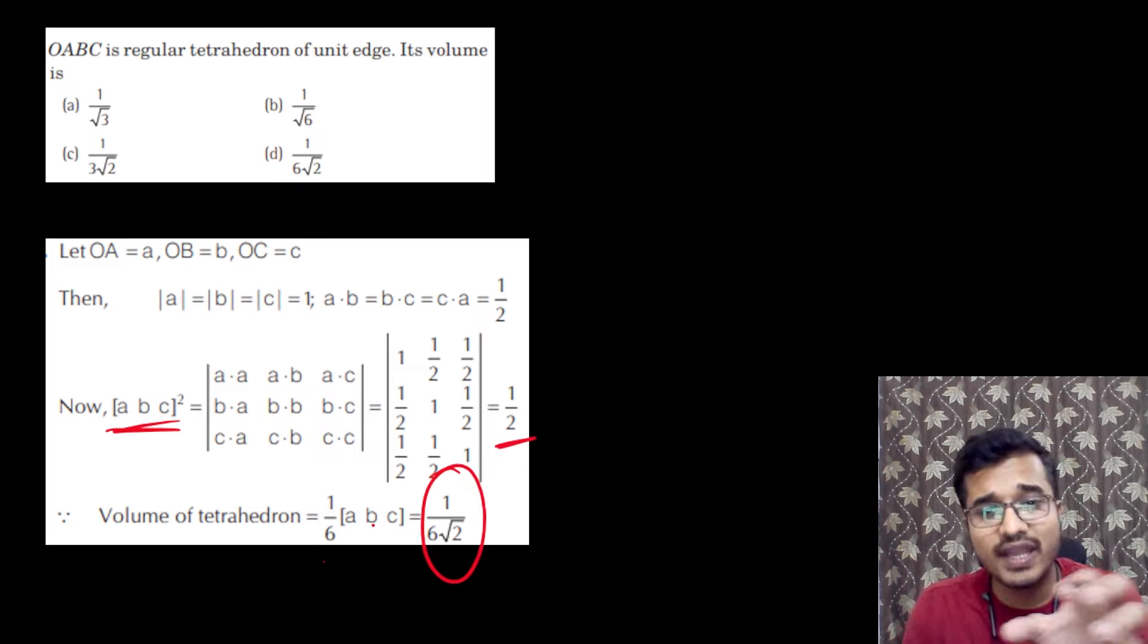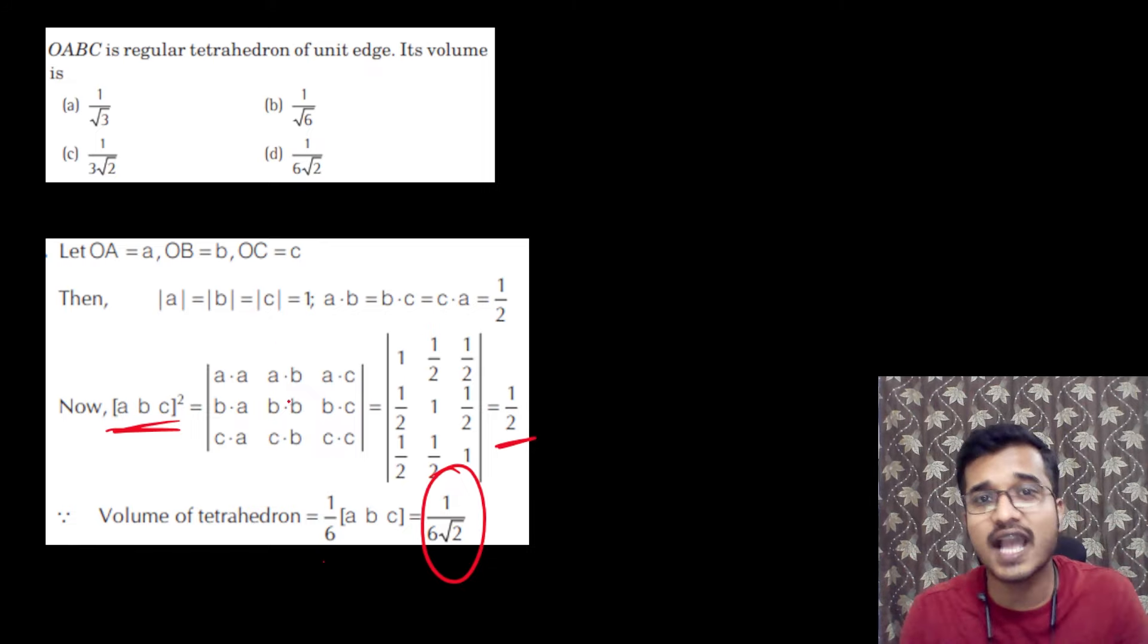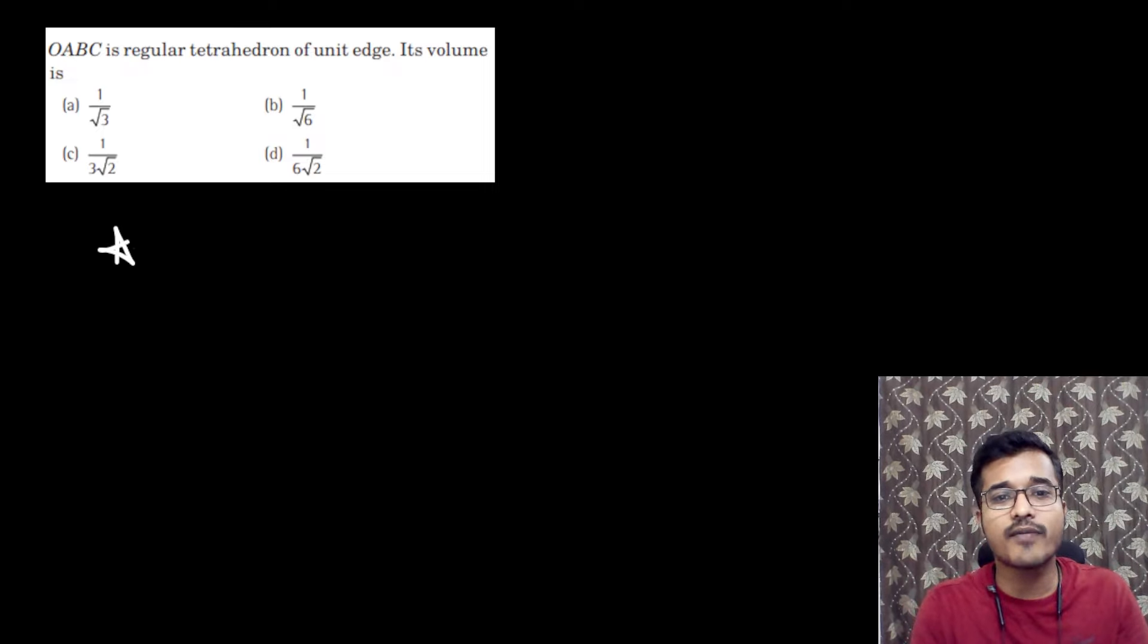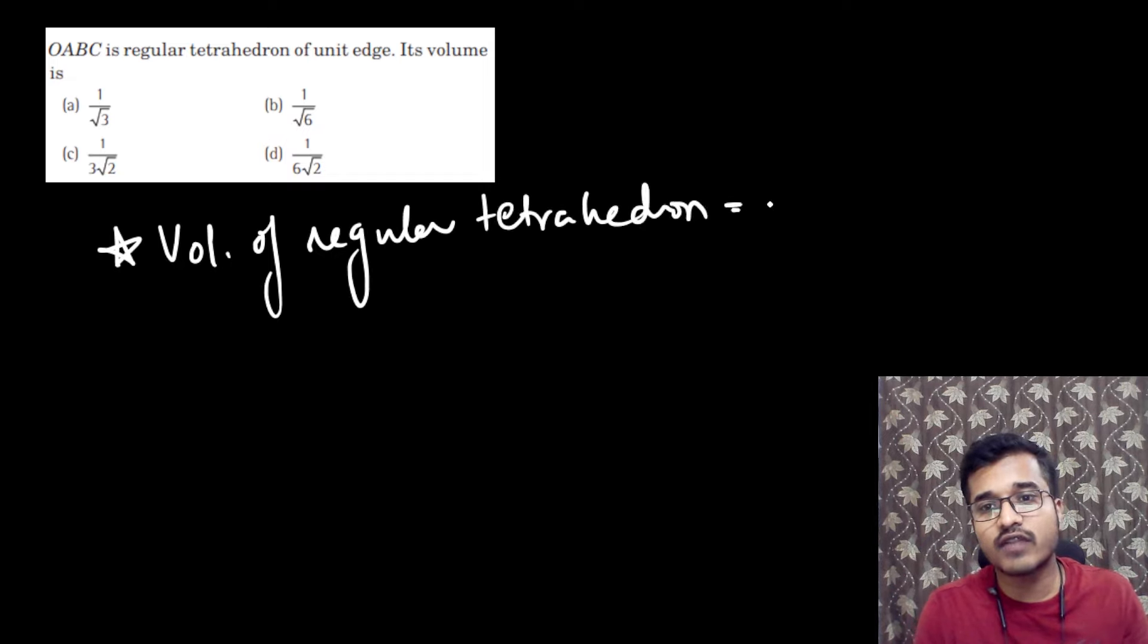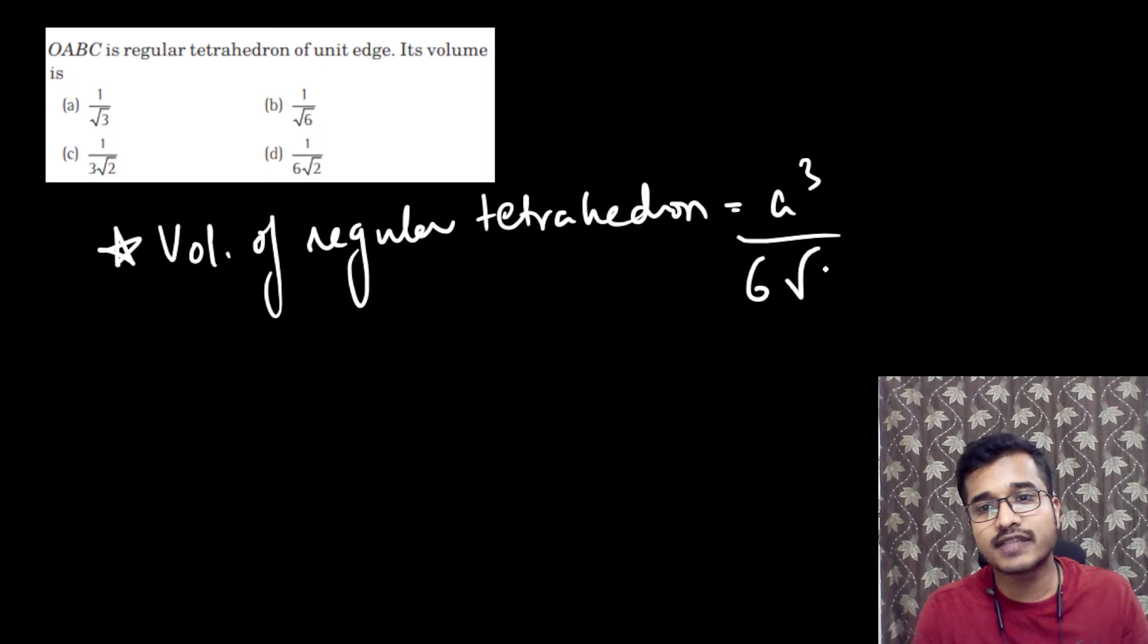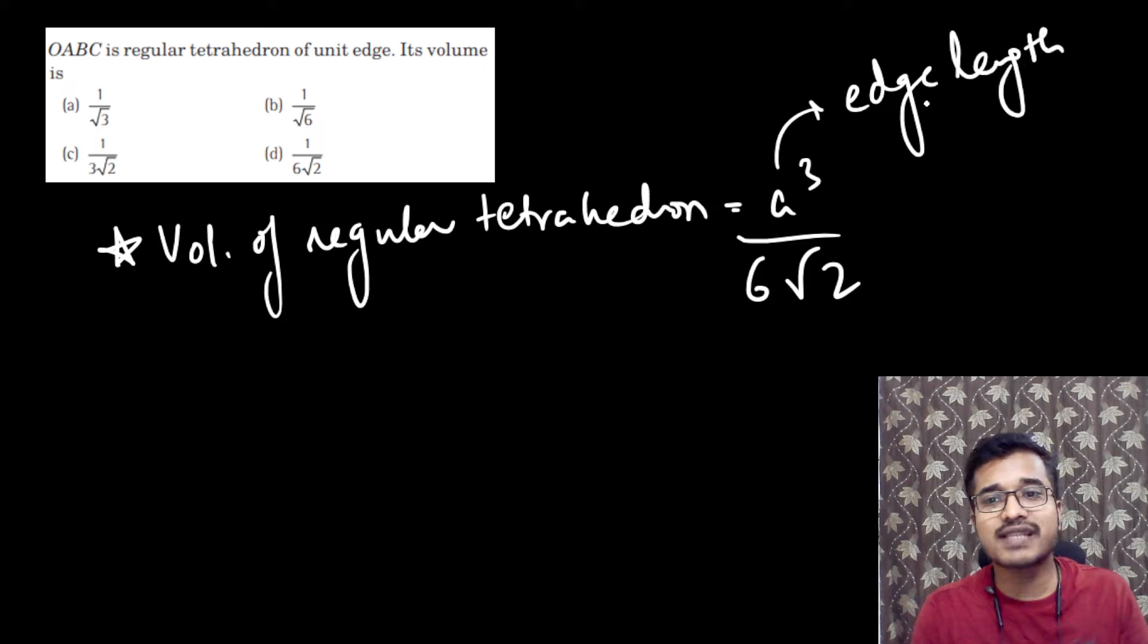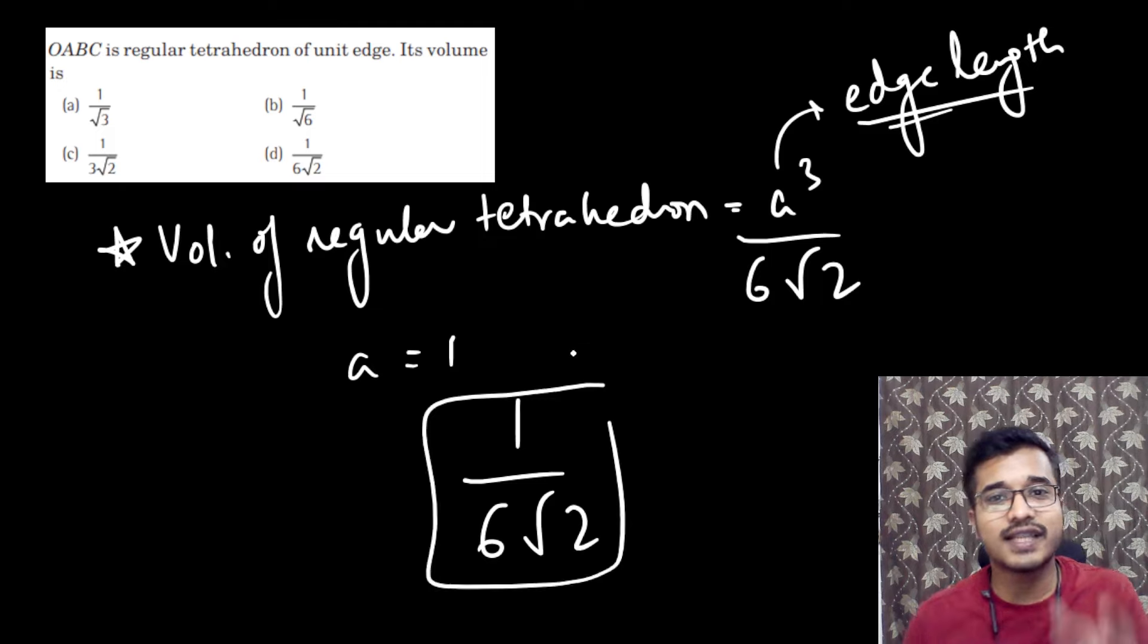But now, if you have this approach here, or if you haven't seen the scalar triple product, you haven't seen the properties, then what could this question be solved? Absolutely. It could be a simple formula. You should know that the volume of regular tetrahedron is equal to A cubed upon 6 root 2. So what we have to do, that is edge length. So it is regular. It means everyone who are equal. So here, there is one, and there is a formula. Now, here edge is equal to one, finally our value will be 1 by 6 root 2.